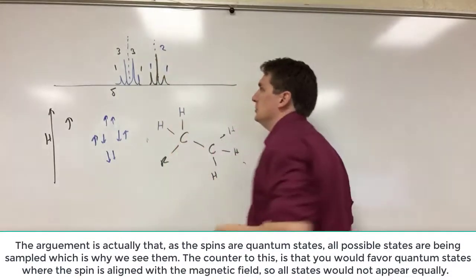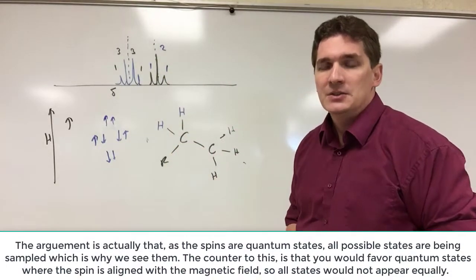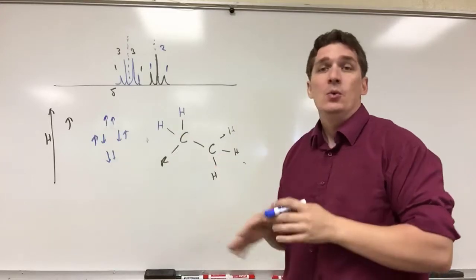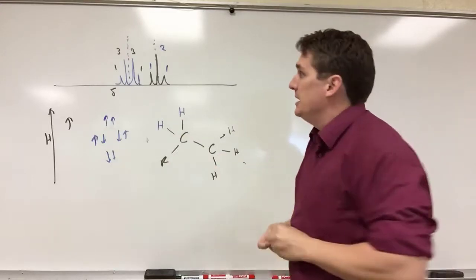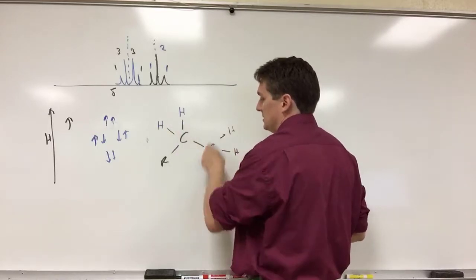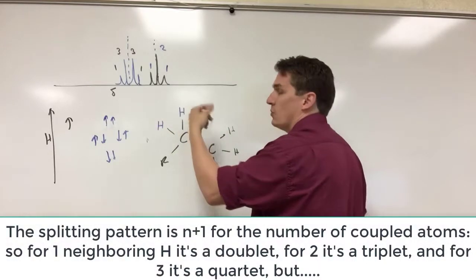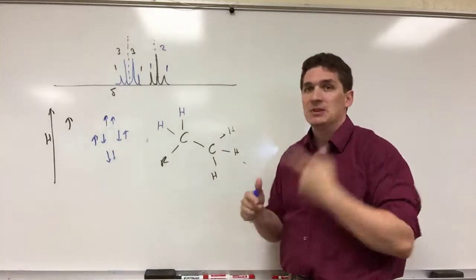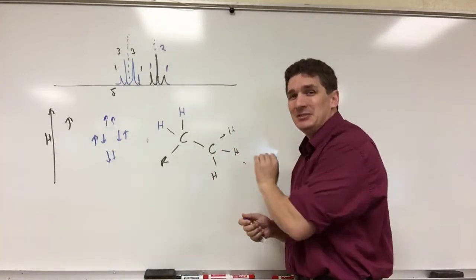And one combination where these are both pointing down. So there's your one, two, one ratios. So if we just have these two connected with these two, we can predict the splitting patterns. And so your splitting patterns here are going to be, if you see three atoms in your nearest neighbor, this would be a quartet. So the splitting pattern is always the number of nearby atoms plus one for that particular diagram.